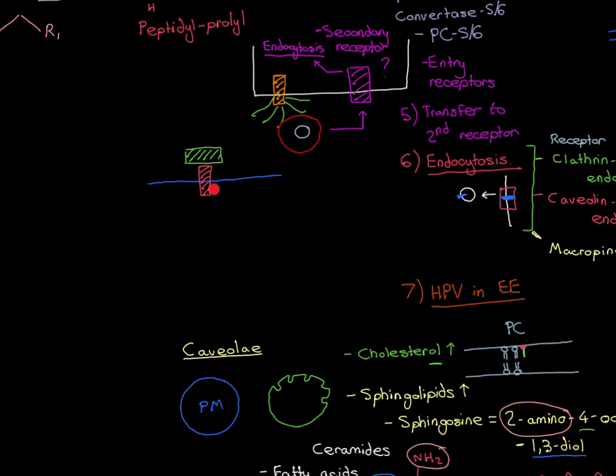The other big difference is that the other two processes both involved the membrane invaginating inwards — that was the way you formed the intracellular membrane-bound compartment, by the membrane invaginating inwards and budding off. In macropinocytosis, we are not going to see any invagination. Instead, we are going to see evagination occurring. So very, very different.